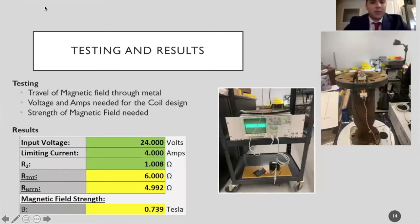For testing, we tested the travel of magnetic field through the metal. As you can see on the far right picture, we have two copper coils connected to an oscilloscope and a DC power supply. As you can see on the oscilloscope in the picture to the left, it is reading the signal running through the pipe, which means there's an electromagnetic field running within the pipe. We also tested the voltage and amps needed for the coil design, and we tested the strength of the magnetic field needed to detect the wireline inside the pipe.